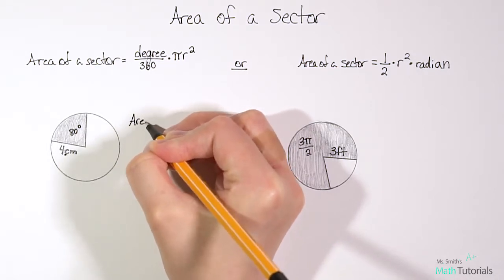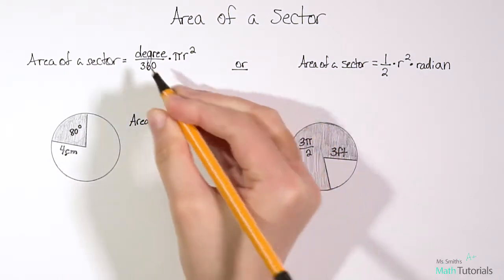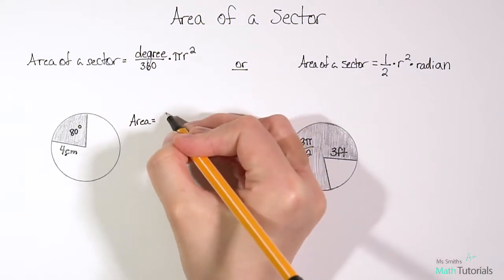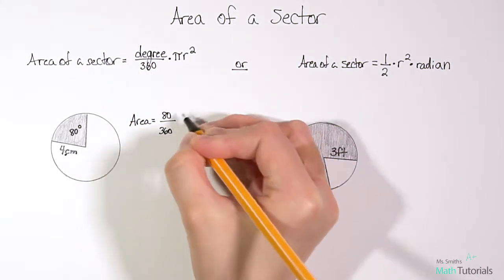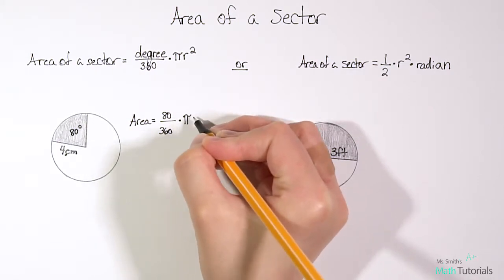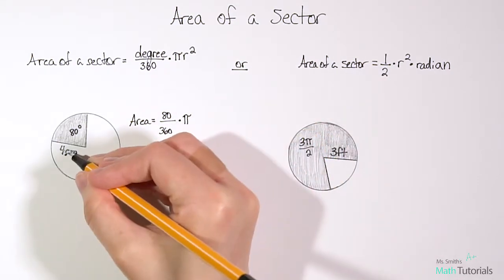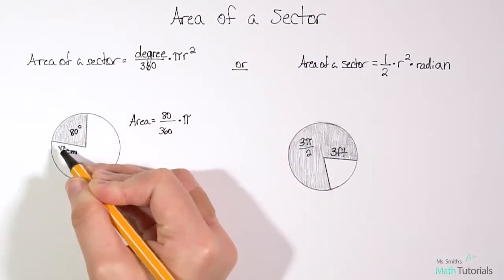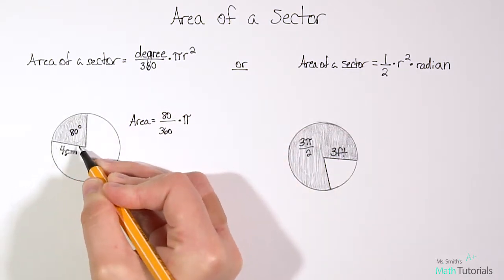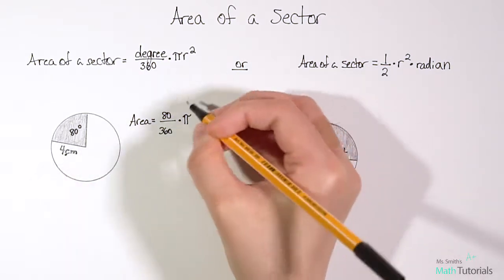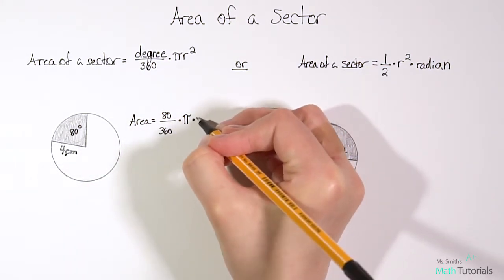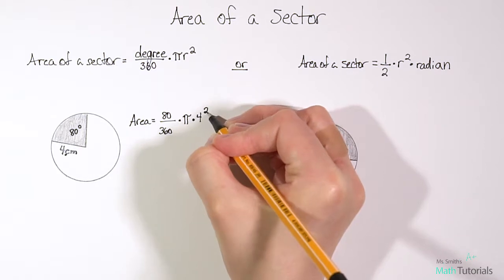So I'm just going to write area equals the degree, which is 80 divided by 360 times pi times r squared. R squared is the radius, so that's the distance from the edge of the circle to the center of the circle, which it tells us here 4 centimeters. So we want to multiply that pi by 4 squared.